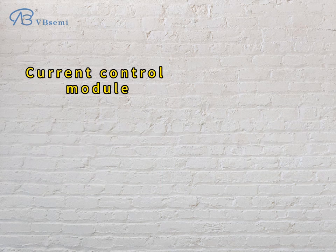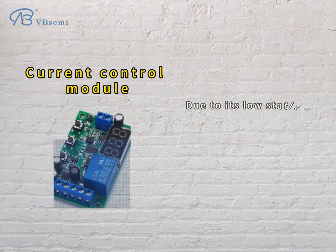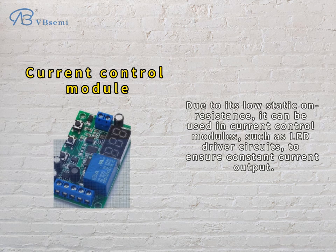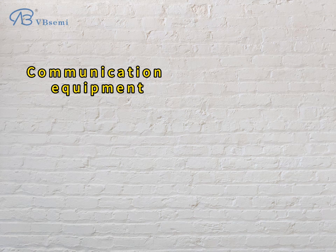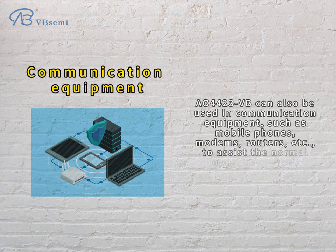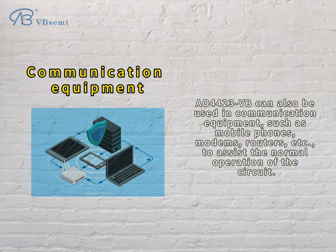Due to its low static on-resistance, the AO4423VB can be used in current control modules, such as LED driver circuits, to ensure constant current output. It can also be used in communication equipment such as mobile phones, modems, and routers, to assist the normal operation of the circuit.